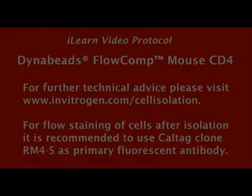Now your cells are ready for downstream applications such as flow analysis, cell culture, or adoptive transfer. For further technical advice, please visit www.invitrogen.com/cell isolation. For flow staining of cells after isolation, it is recommended to use Caltagclone RM4-5 as primary fluorescent antibody.